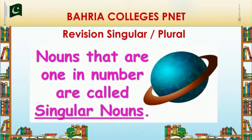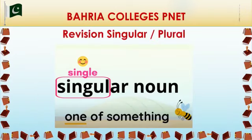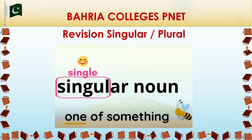Students, remember, nouns that are one in number are called singular nouns. Just focus on the spelling of singular. The starting sound of singular is 'single' — you can imagine it as single, that means one of something. A singular noun refers to only one person, place, animal or thing.